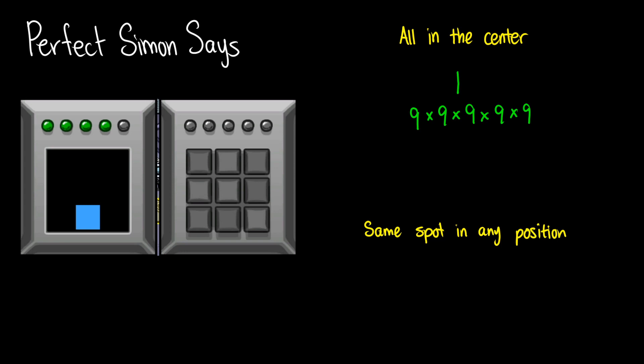Which means that the probability of having every single button in the center for a Simon Says sequence is 1 over 59,049, which means that on average, you will see a Simon Says with all the buttons in the center once every 59,049 attempts, giving you a whopping 0.00139% chance of that happening. In other words, it's pretty much never going to happen.